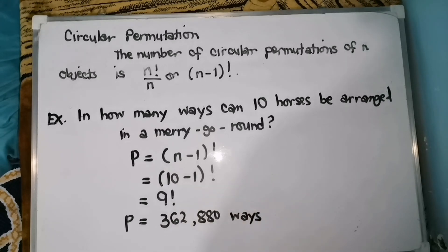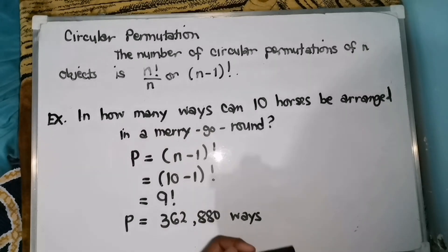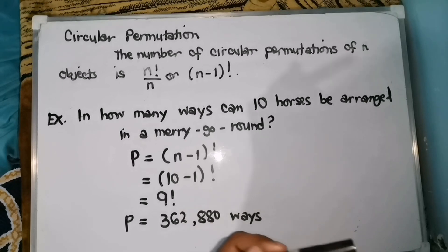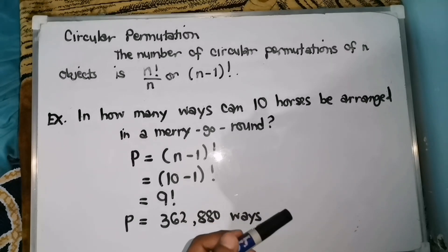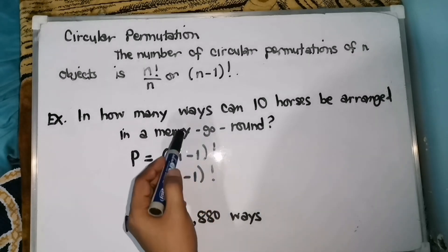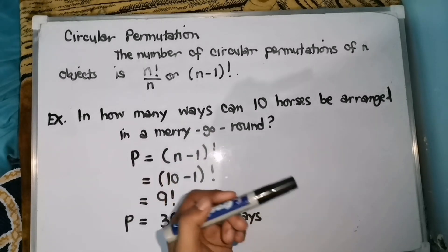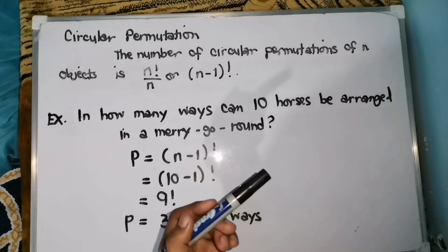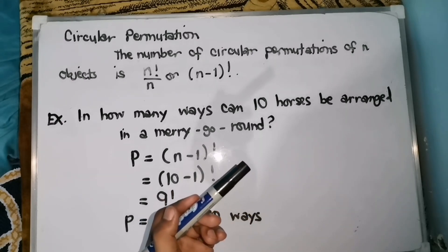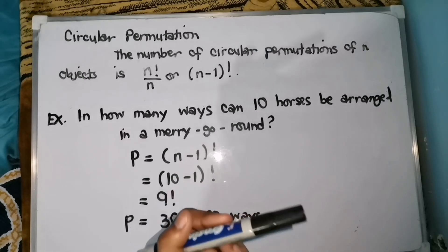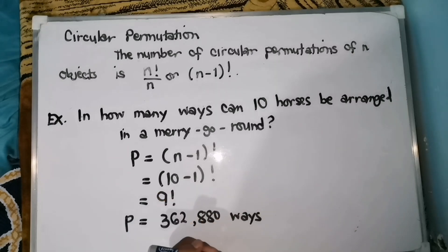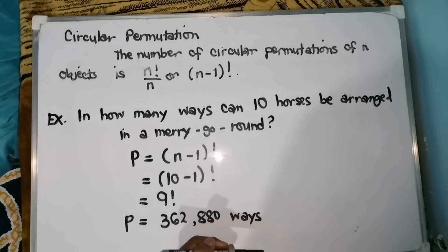There are 362,880 ways we can arrange 10 horses in a merry-go-round. Again, you have to remember na gagamitin natin ang formula for circular permutation when we are talking about arrangement na circular or circle — just like sa merry-go-round, or sa circular table, or in how many ways we can arrange the beads in a bracelet. So, that's it for today. I hope that you'll learn something from me. Don't forget to share this video, give it a thumbs up, and see you on my next video lesson. Thank you for watching!